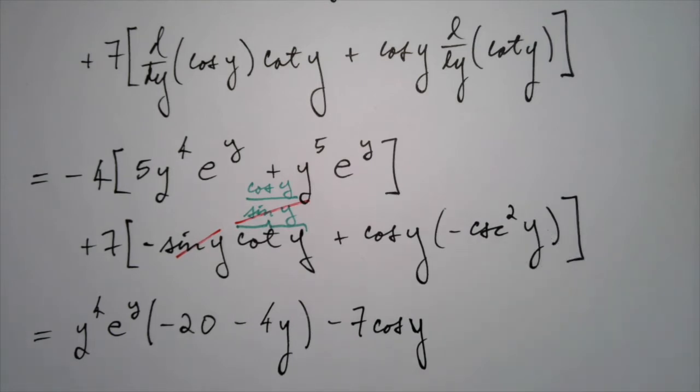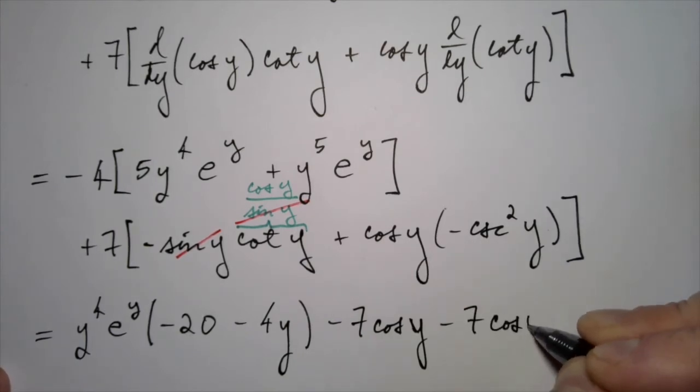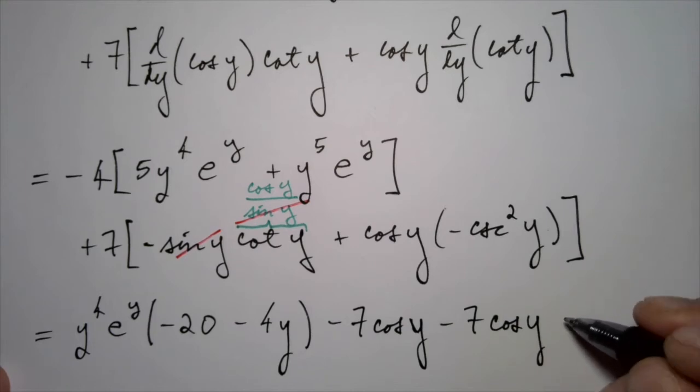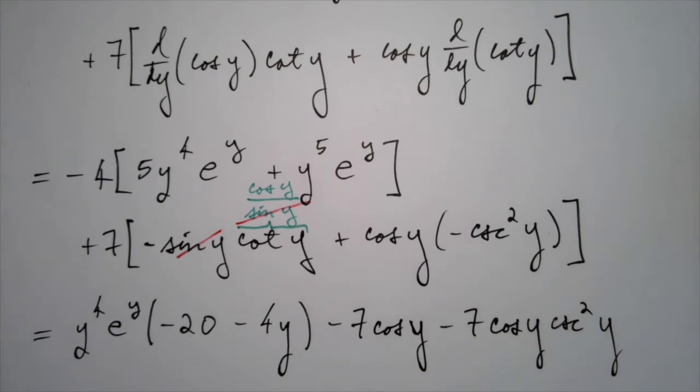What about for this one? Cosecant is one over sine. So I guess we could write one of the cosine over sines as a cotangent. In that case, it would look like cotangent times cosecant. Or we could leave it this way just in terms of cosine and cosecant. Honestly, I don't really see an advantage either way. So let's just leave it the same. We'll have minus seven cosine of y times cosecant squared of y. I guess the advantage of writing it this way is that we could factor out this common factor of cosine of y if we wanted to. Let's leave it that way.